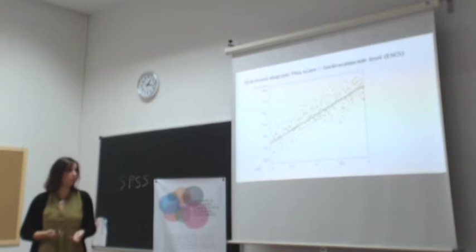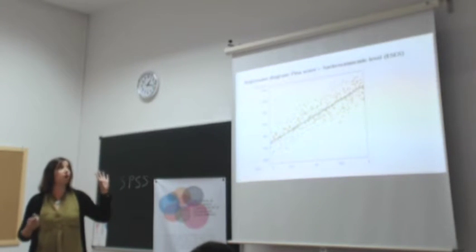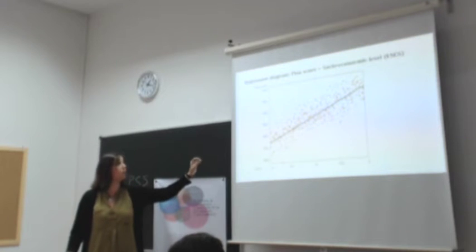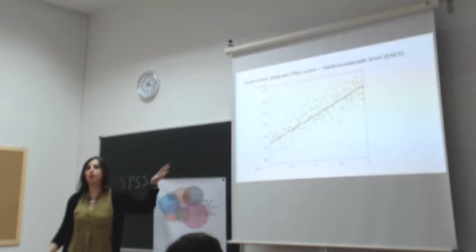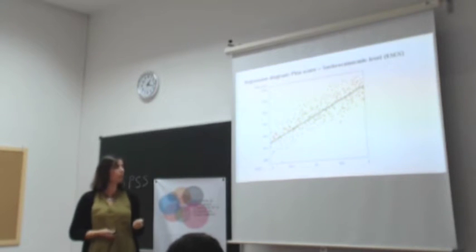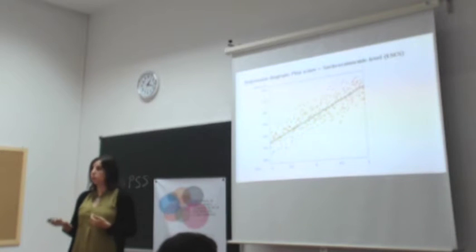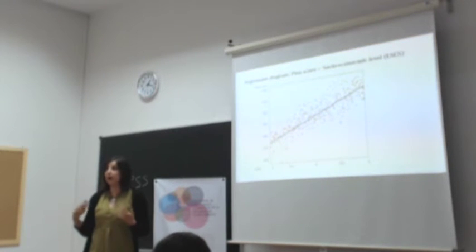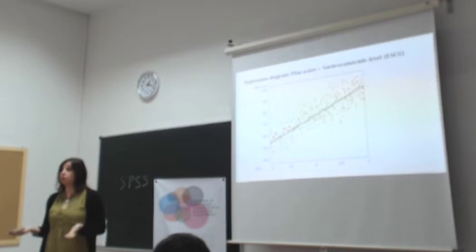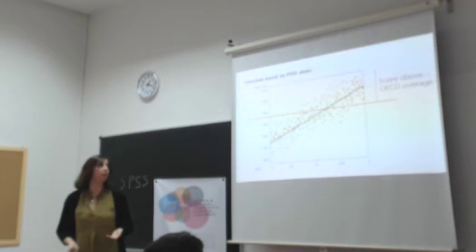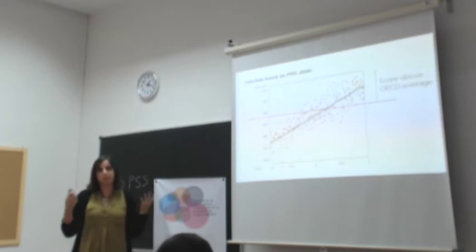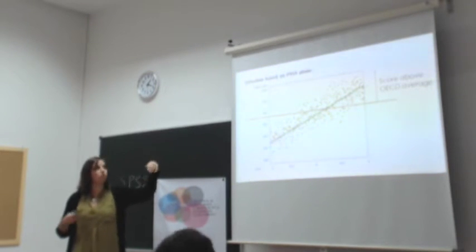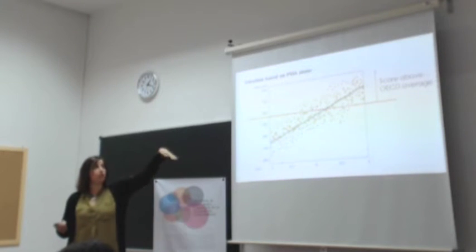But why is this important? Let's look at an example. This is a typical regression diagram in which each dot represents a school. Each dot shows the school's PISA score and its average socio-economic level. Normally, when someone wants to identify the best schools according to PISA, they point to those with the highest scores. In this diagram, we would draw a horizontal line at, for example, the OECD average level and take the schools above that line.